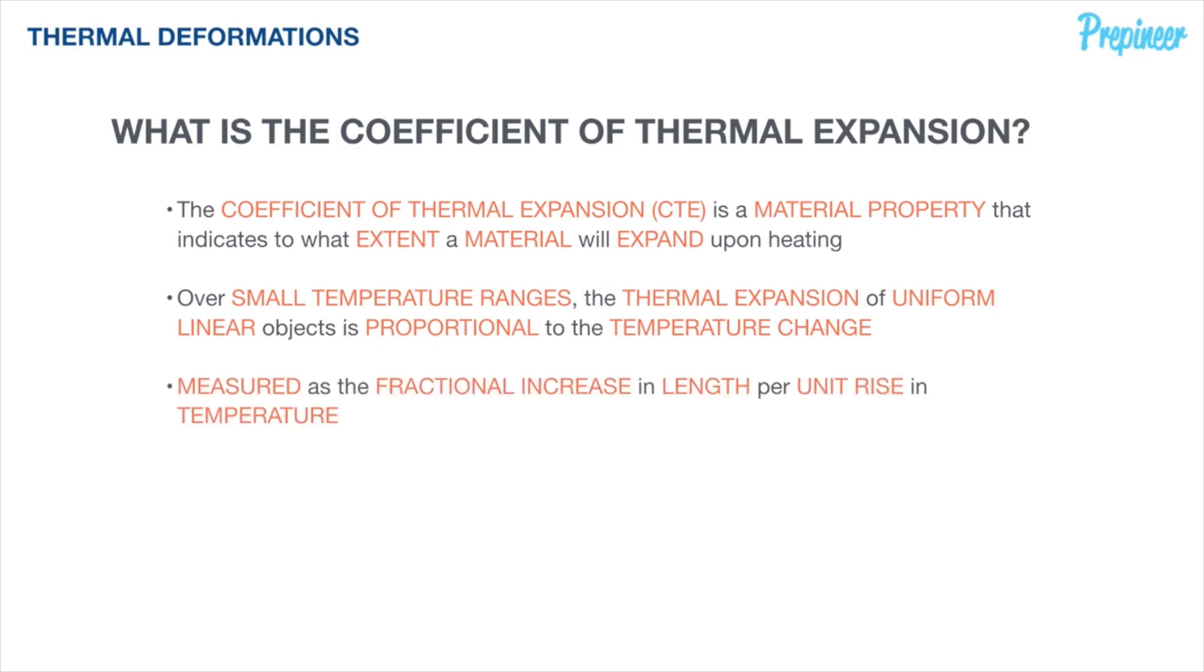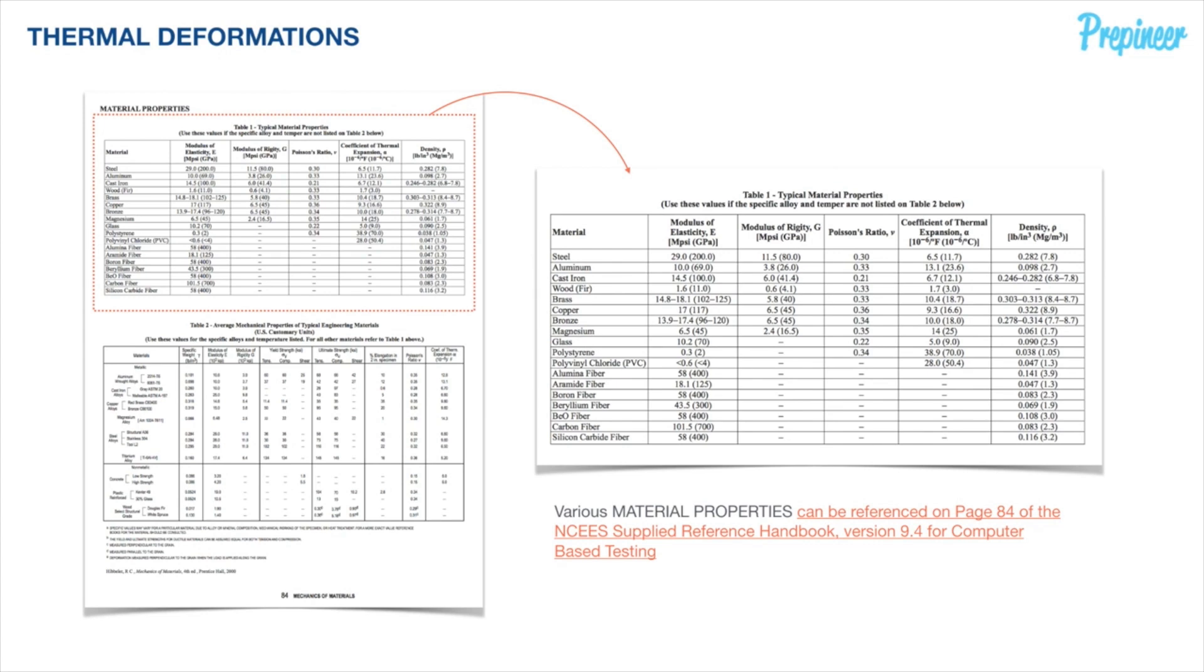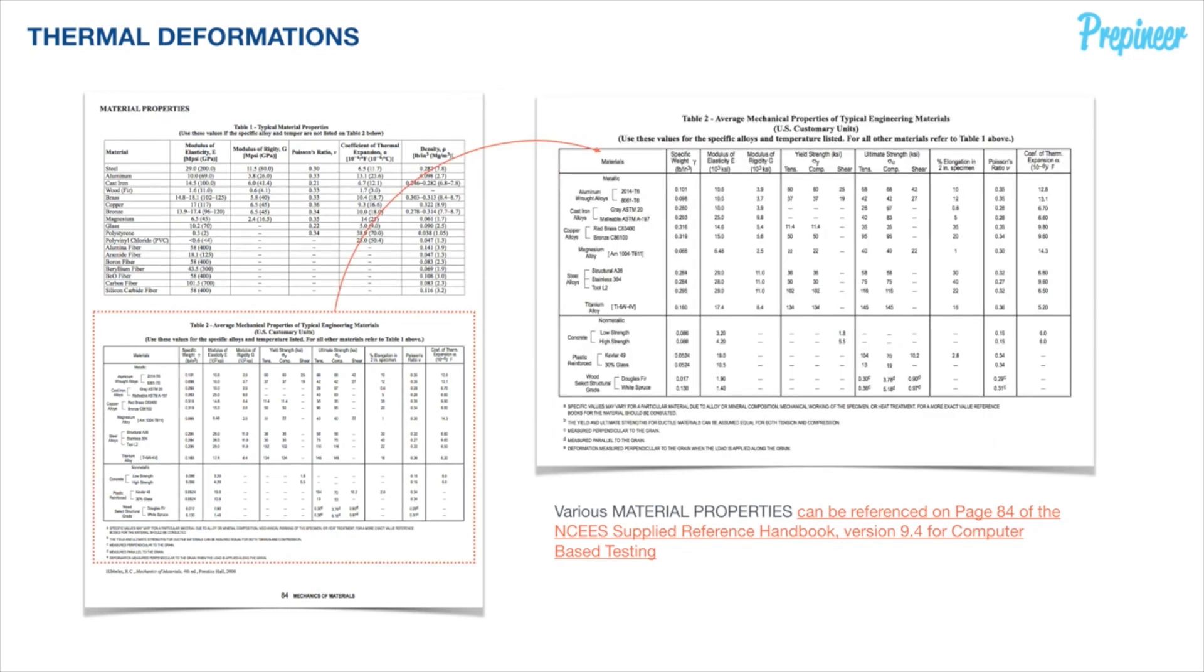The coefficient of thermal expansion is defined as the fractional increase in length per unit rise in temperature. We can reference and pull the values of this coefficient of thermal expansion for various materials on page 84 of our NCEES reference handbook, version 9.4. Specifically, if you look here on page 84, it's that top table. We see in the fifth column to the right. And then again, on this lower table, we can find the coefficient of thermal expansions defined for various alloys. In this table, we'll specifically be referencing that very last column.